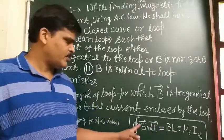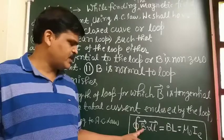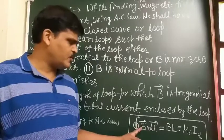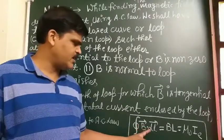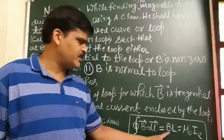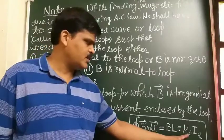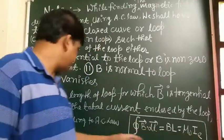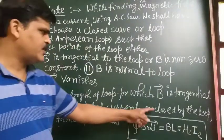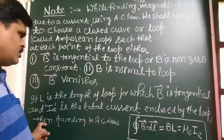So, line integral of magnetic field around a closed loop, vector B dot dL vector, which is written as B·dL equal to μ₀I_E, where I is the total current enclosed by the loop.